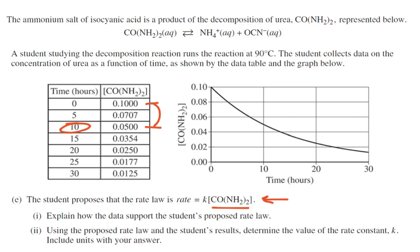So it took 10 hours to drop down to half. Now from 0.05, you drop down to 0.025, and that took another 10 hours. So now we're at 20, and 0.025 drops down to 0.0125 in another 10 hours. So we have a constant half-life. We can also see it here. This drops down to half, half of that, and then half of that.